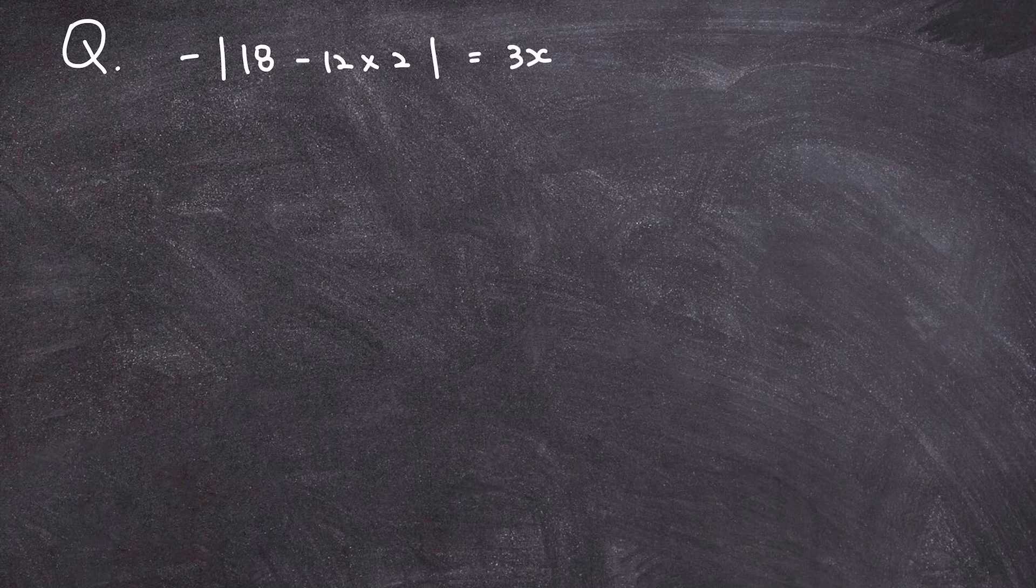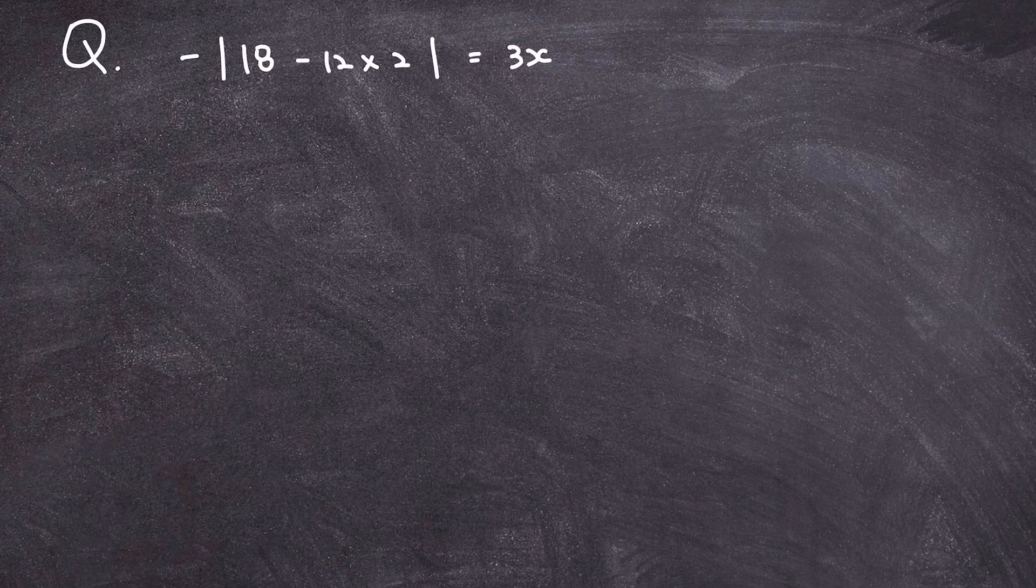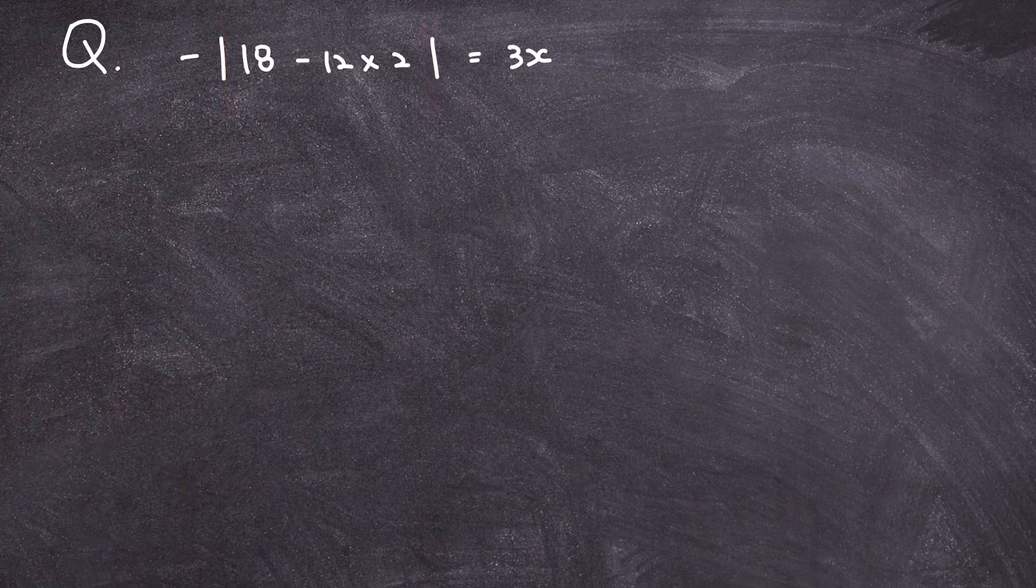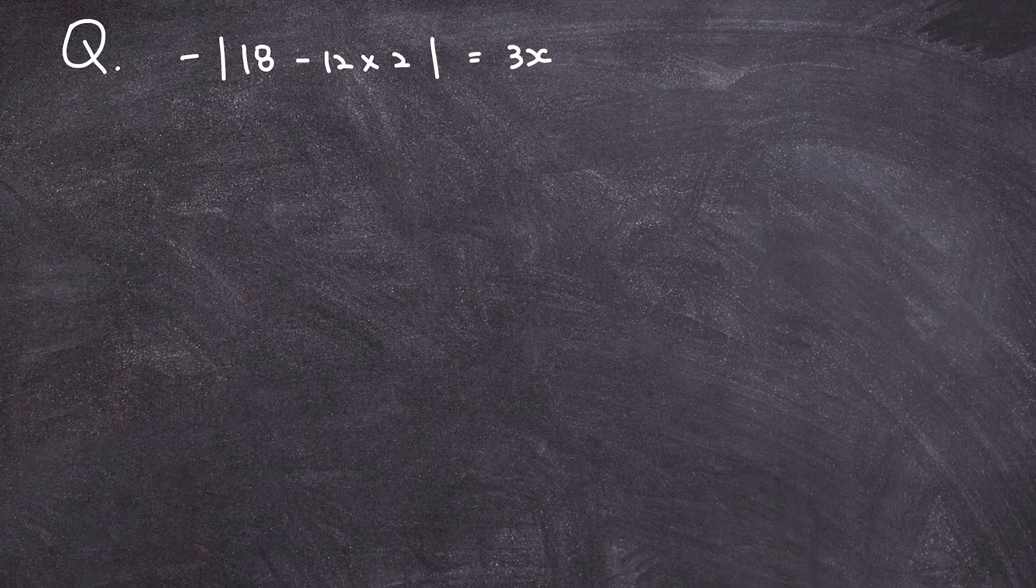I have negative absolute value of 18 minus 12 multiplied by 2 is equal to 3x. Now I do not have x within the expression of absolute value, so I'm not going to call this an absolute value equation, but regardless, you need to know what to do about this absolute value sign in an operation, so I'm going to show you step by step.